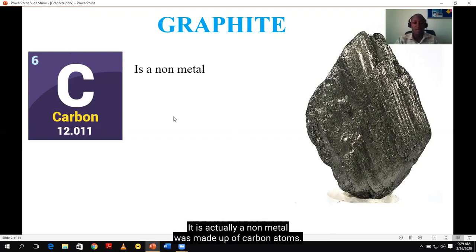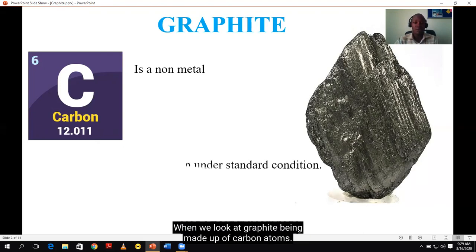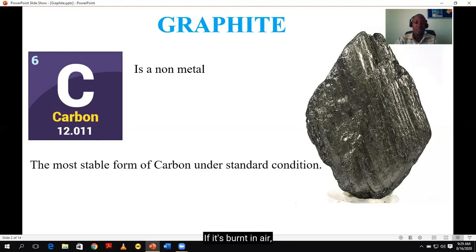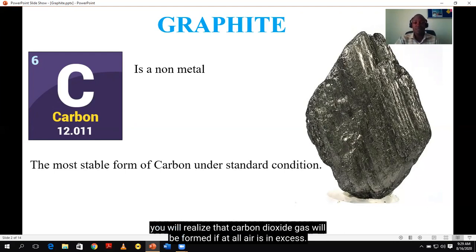When you look at graphite, it is actually a non-metal because it's made up of carbon atoms. However, we shall see one of its properties that makes it behave like a metal. When you look at graphite being made up of carbon atoms, if it's burnt in air, you realize that carbon dioxide gas will be formed if at all air is in excess.